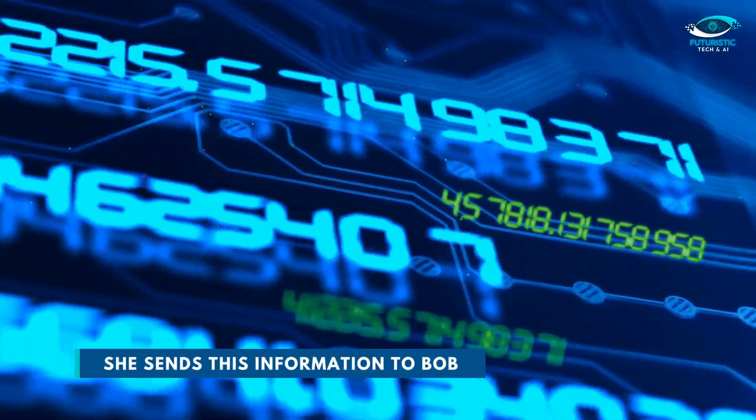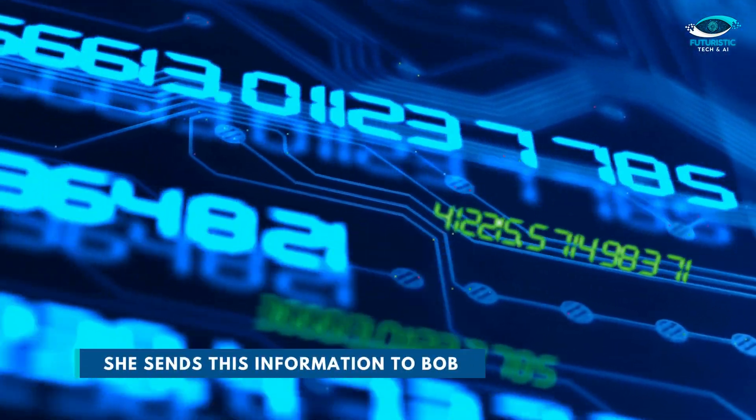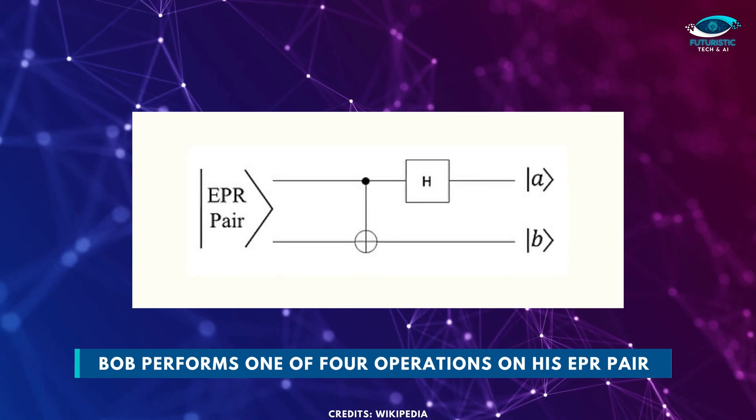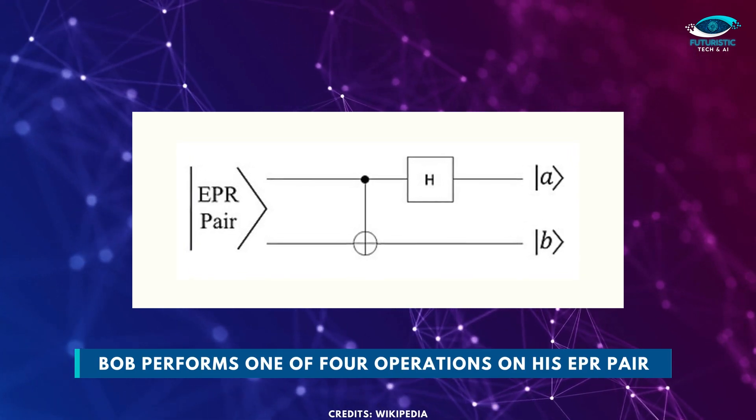She sends this information to Bob. Depending on Alice's classical message, Bob performs one of four operations on his half of the EPR pair.